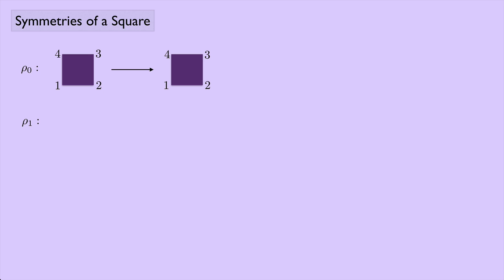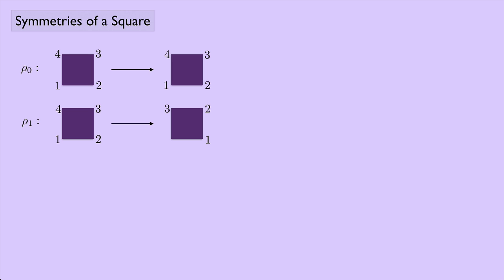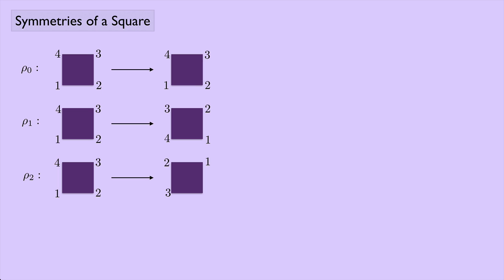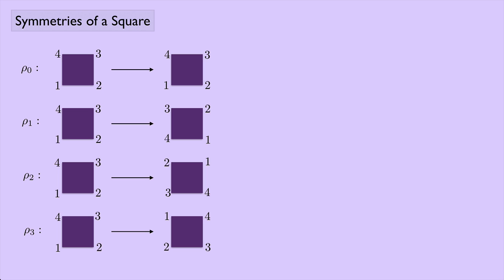Next I have ρ₁, a counterclockwise rotation of the square. The 1 rotates over here, the 2 goes up here, the 3 goes over here, and the 4 goes down there. Then ρ₂ rotates it twice — 1 goes up here, 2 here, 3 here, 4 here. And ρ₃ is one more rotation: 1 goes over here, 2 here, 3 here, and 4 here.